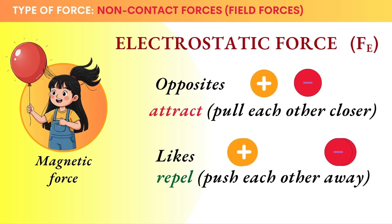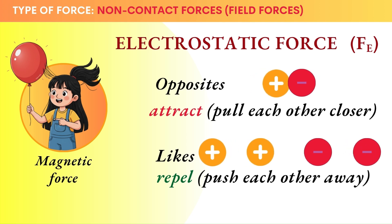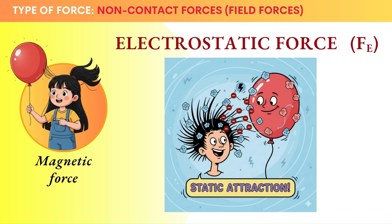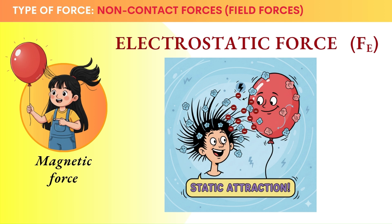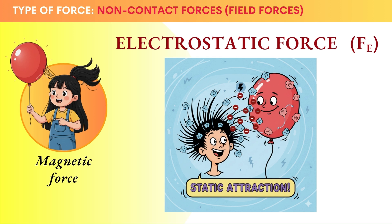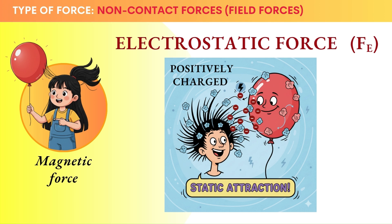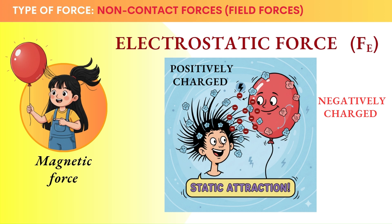When you rub the balloon on your hair, it makes the electrons from your hair move to the balloon. Electrons have a negative charge, so since they leave your hair and move to the balloon, your hair becomes positively charged and the balloon becomes negatively charged. Since they have opposite charges, attraction happens.